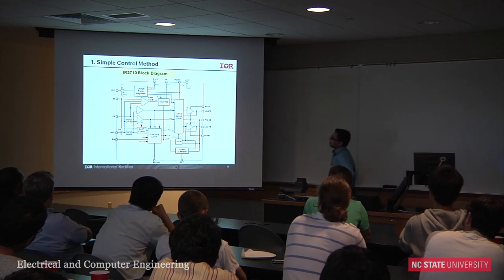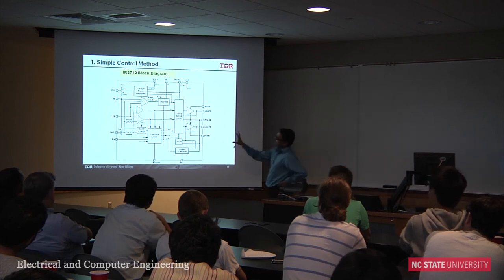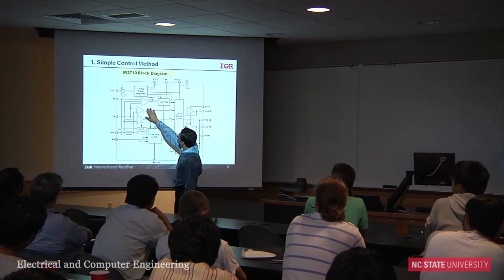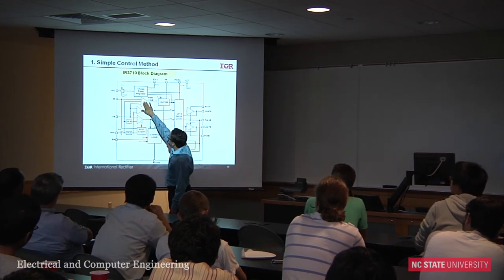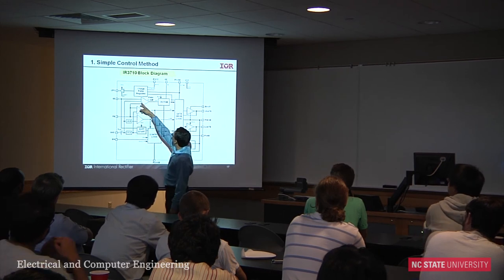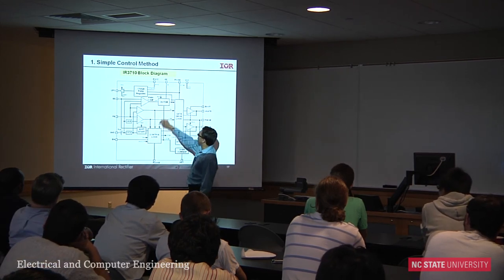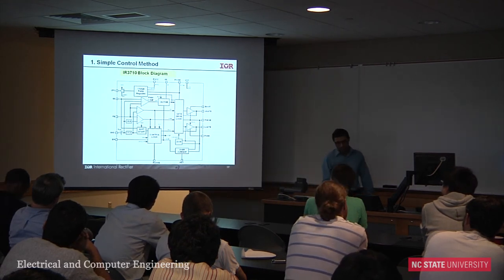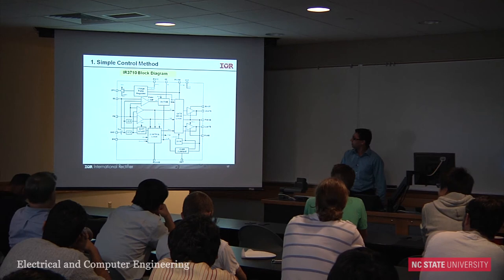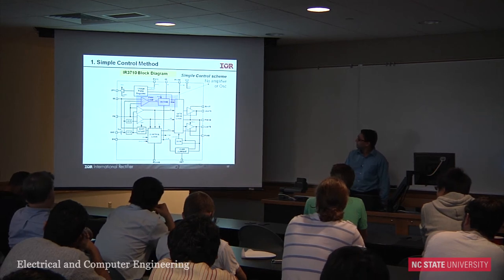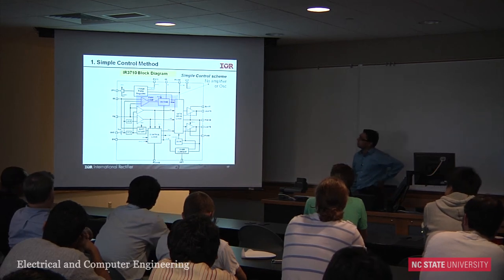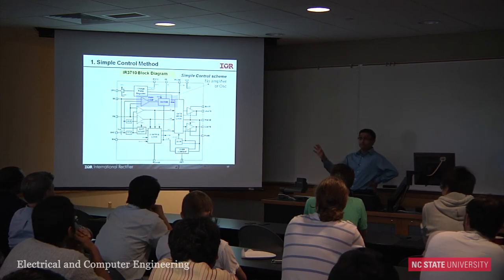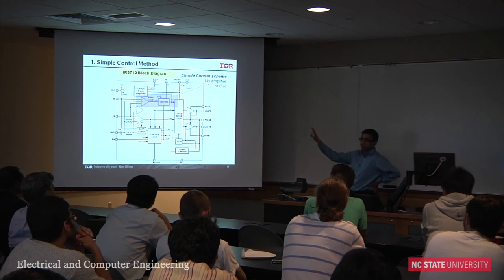Here is the block diagram inside the IR3710 IC. The key comparator is shown, along with the on-time signal generation circuit — the flip-flop and comparator are inside. Critically, there is really no oscillator and no error amplifier. If you take anything from this presentation, remember those two things.